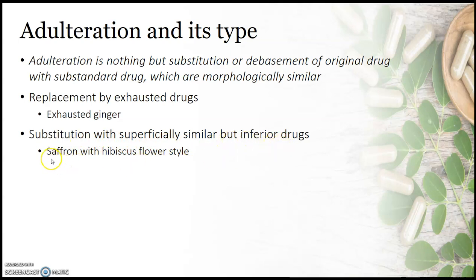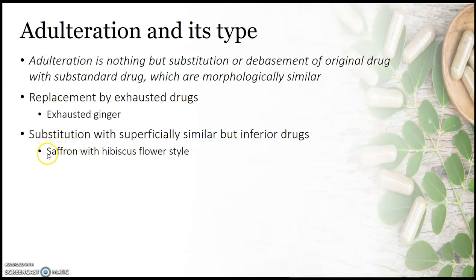The second type is substitution with a superficially similar but inferior drug. Saffron is a very costly crude drug obtained from the styles and stigmas of the saffron flower. These styles and stigmas look similar to hibiscus flower styles, but hibiscus is inferior because it does not contain the aroma or color of saffron.